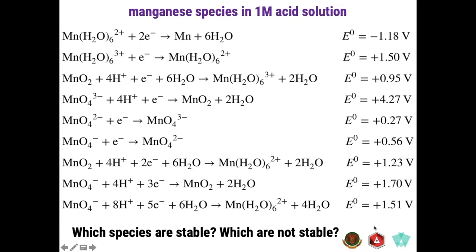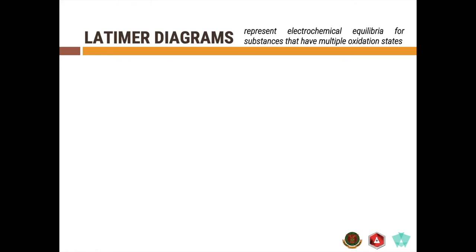So can we determine, by just looking at these reactions, which manganese species are stable, which are not stable in acidic solution? And with the help of the Latimer diagrams, you can have a better representation of the electrochemical reactions undergone by substances with different oxidation states.